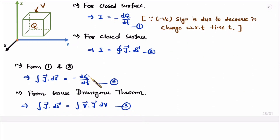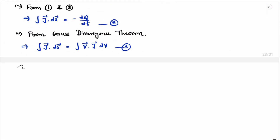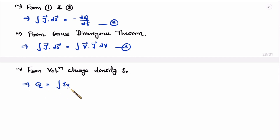On the right-hand side, we have −dQ/dt. We can convert the charge Q into a volume integration form. Given volume V has volume charge density ρ_V, so total charge Q equals the volume integration of volume charge density ρ_V. Let us call this equation four.